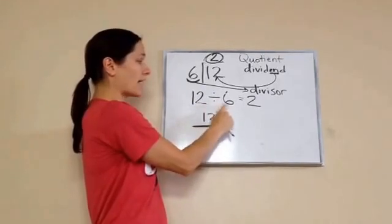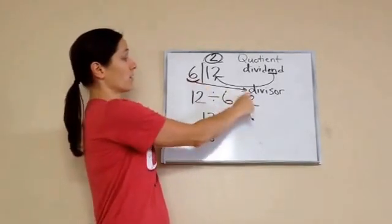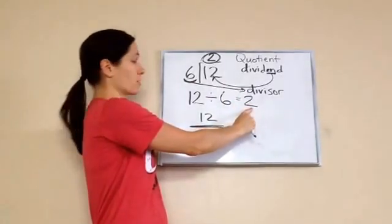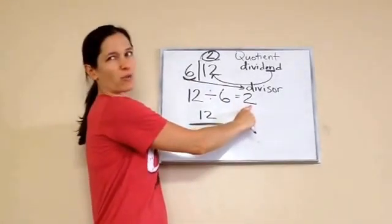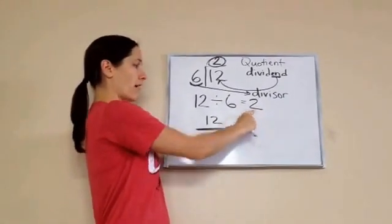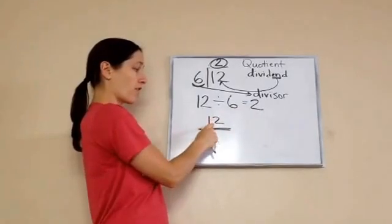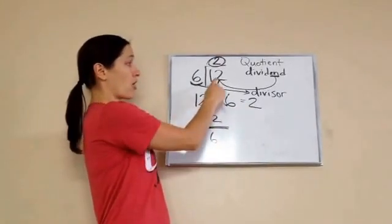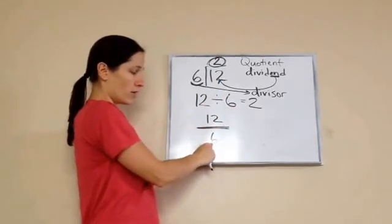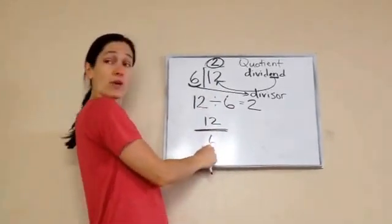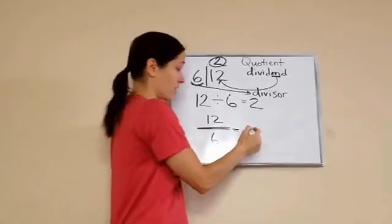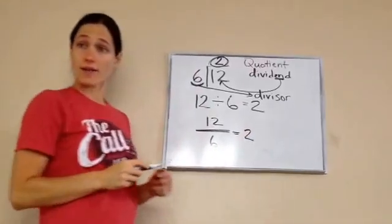The one that's dividing with is our divisor. And my answer is the quotient. It's kind of weird. Now, let's look at this problem. The first one listed is our dividend. Top one's dividend. The one that we're dividing with is the divisor. The answer is the quotient.